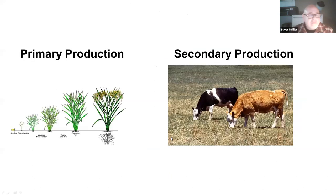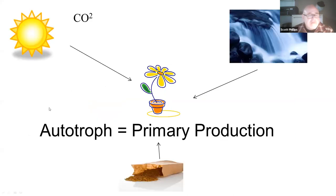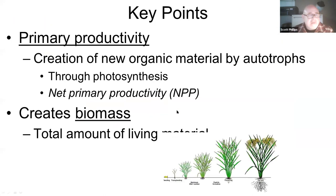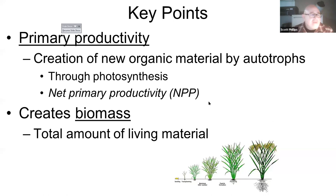Primary production is done by autotrophs — by plants. Primary production is the formation of organic material by plants through photosynthesis, a chemical reaction that creates new organic material. This creates biomass, which refers to the total amount of living material in an ecosystem. Secondary production is done by heterotrophs — like cows eating plants and growing. Autotrophs take in water, sunlight, and minerals to carry out primary production.